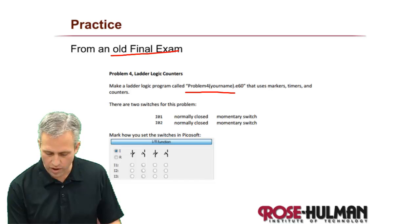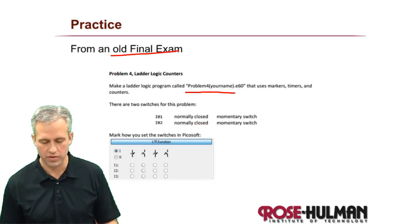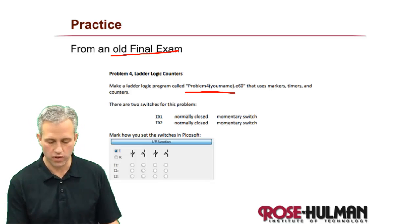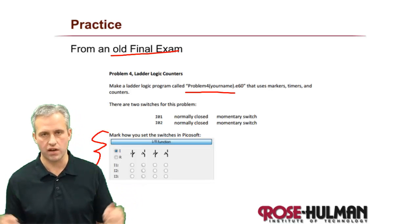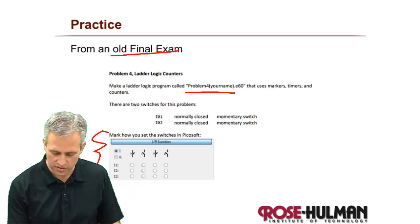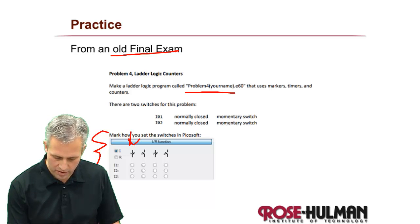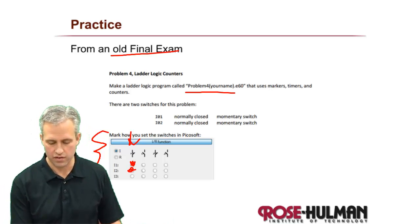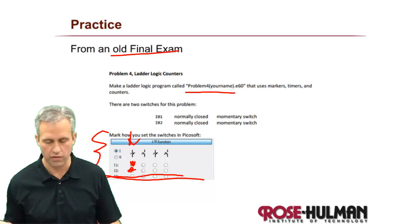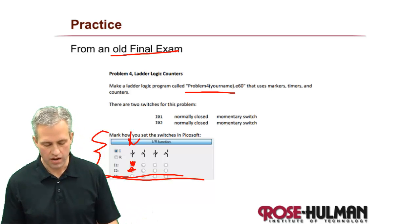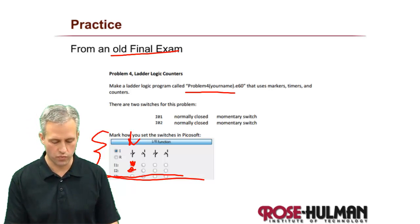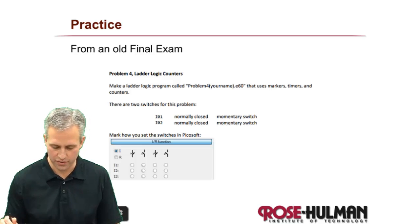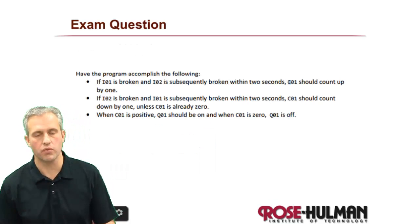The first question was: mark how you will show them in PicoSoft. This is easy — normally closed is this symbol, momentary is this one. So I1 and I2 get those types; I3 doesn't matter, I'd just leave it blank. That was question one — just the setup. The actual problem statement is coming next.